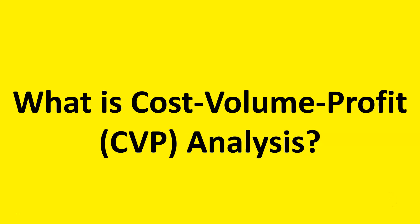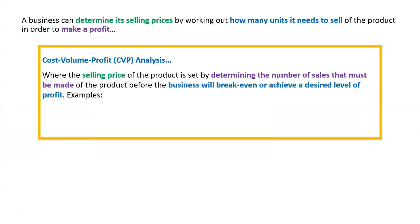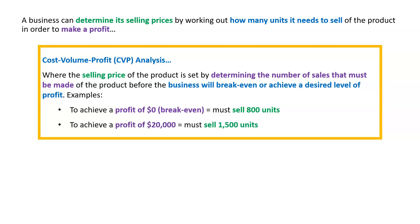What is cost volume profit, or CVP analysis? It's one of our methods for setting prices. It's where the selling price of the product is set by determining the number of sales that must be made before the business will either break even or achieve a desired level of profit. For example, to achieve a profit of zero dollars — which we call break even — we have to sell 800 units, or to achieve a profit of $20,000 we have to sell 1,500 units.